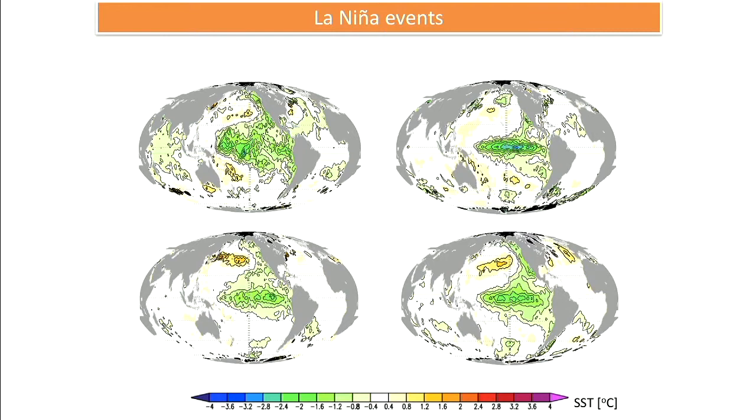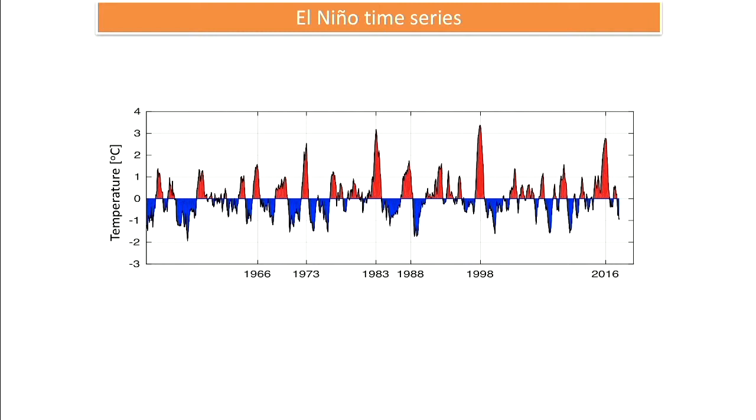Here's a time series of ENSO. The four big events are 2016, 1997, 1983, and 1973. Some people say it's oscillating, some say maybe not so much. You see there are sometimes big ones and it's not exactly oscillating — it's fairly chaotic, but there are somewhat two-to-seven year oscillations, even though they are not that clear. It's a bit noisy.